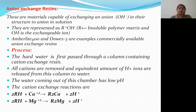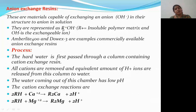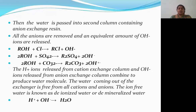Next, the anion exchange resin. Anion exchange resins have the capability of exchanging their anions with other anions which come into contact with them. They are represented as R-OH, where R is the insoluble polymer matrix and OH is the exchangeable ion. Commercially available examples include Amberlite 400 and Dowex 3.